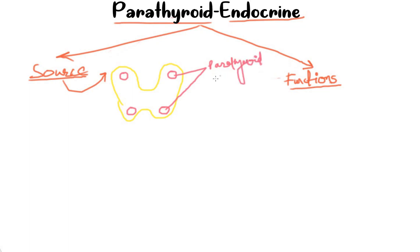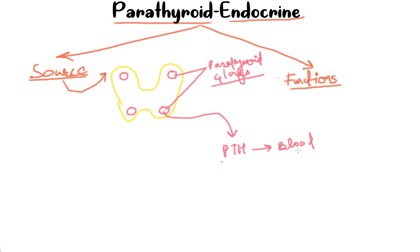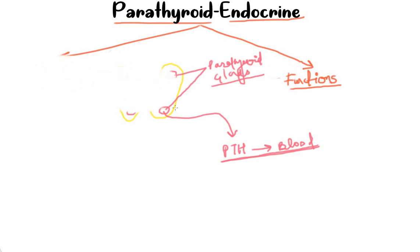These parathyroid glands produce the parathyroid hormone (PTH) and release it into the blood. So this is the source of the parathyroid hormone — the parathyroid glands which are present on the posterior aspect of the thyroid gland.